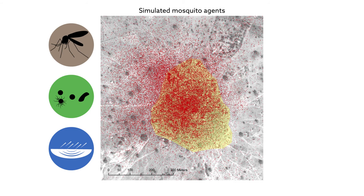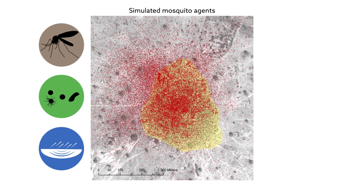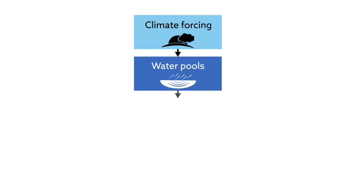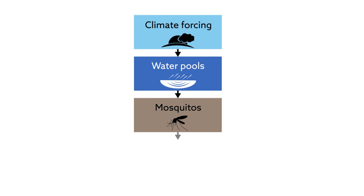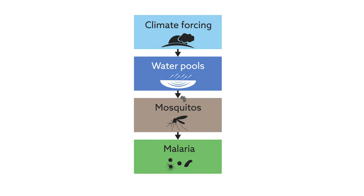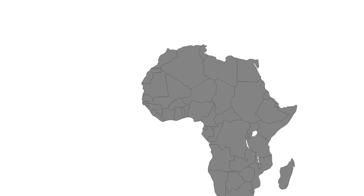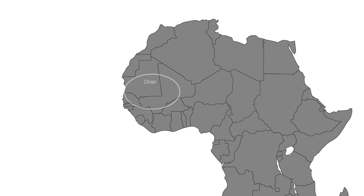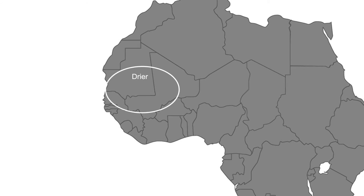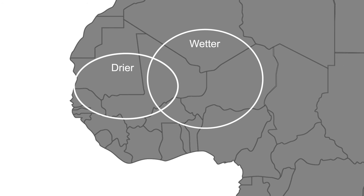The scientists then used this model to predict whether malaria outbreaks will become more common or more severe in the future. With climate change, the western part of West Africa is expected to get drier. In the east, it will likely get wetter. In all places, the temperatures will rise significantly.